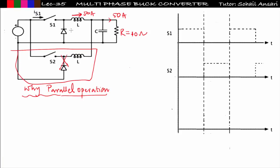The switch current will depend upon the duty cycle. The duty cycle value is between 0 and 1. Let us say the switch current is 40 amperes; to transfer 40 amperes across switch S1 we need this converter. Now if I increase the load — reduce the resistance — the load current becomes 100 amperes, but this switch has a rating of only 50 amperes. So 100 amperes would flow through the inductor, and if based on duty cycle the switch current exceeds 50 amperes, we cannot connect that load because every switch and inductor has a maximum current capacity.